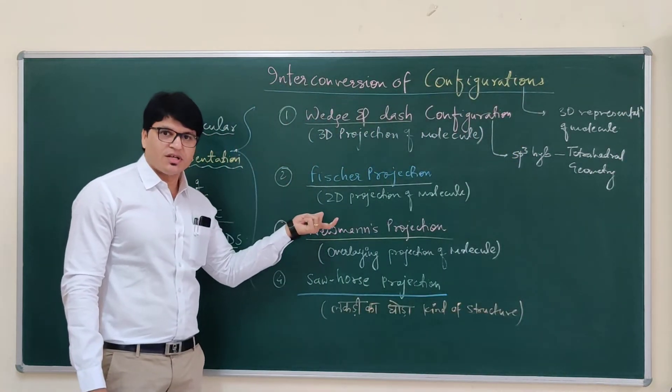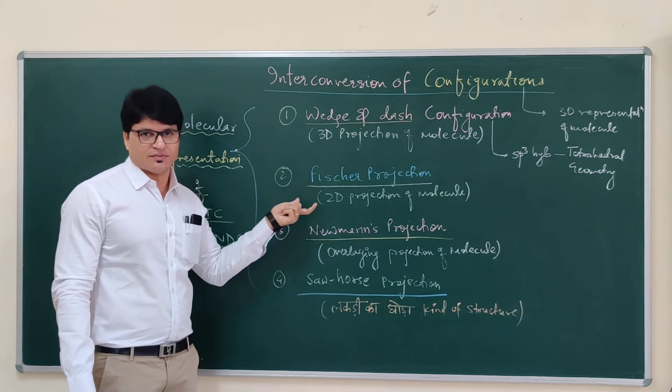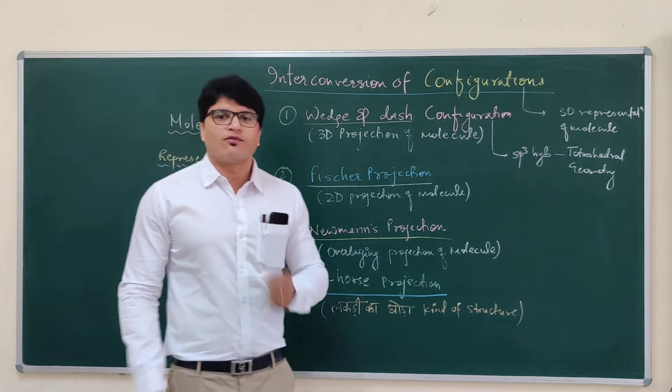The second is Fischer projection. This is the core of optical isomerism. If someone is trying to find absolute configuration,